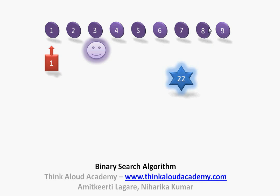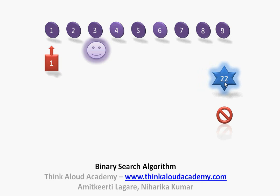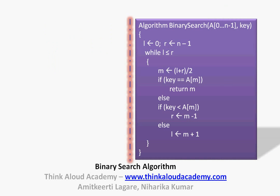We go to the right half of 7, which has two elements. The lesser middle element is 8, so we compare 8 and 22. Since 8 doesn't match 22 and 22 is greater than 8, we go to the right half of 8. That right half contains just one element — 9 — which is also the middle element for that half. We compare 9 and 22. Since 9 doesn't match 22 and there are no more elements, we are done with the search. Element 22 was not found.